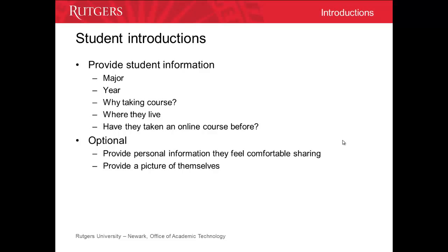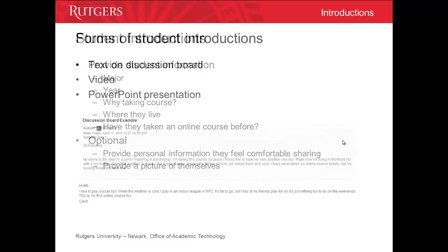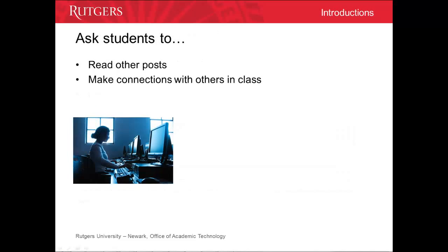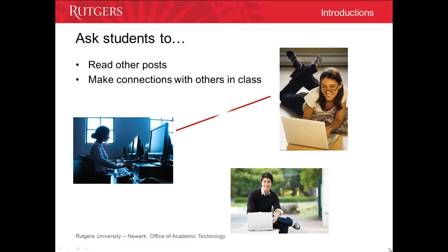You could ask students to optionally provide some personal information and a photo if they're comfortable sharing. One of the most common ways to have students introduce themselves is through posting on the discussion board. For more creative or technically inclined students, they could create a PowerPoint presentation or webcam video — just make sure they provide the link in their discussion board post. To foster a sense of community, ask students to read each other's introductions and reply to at least two other people in the class, encouraging them to actively engage with their peers' postings.